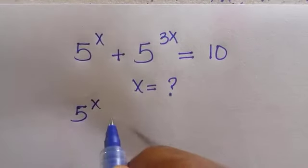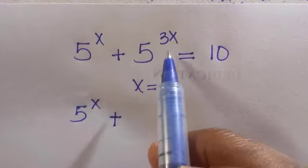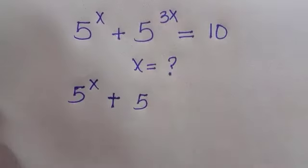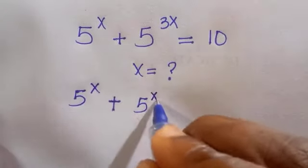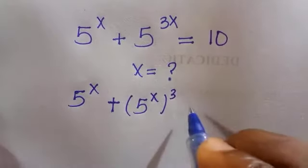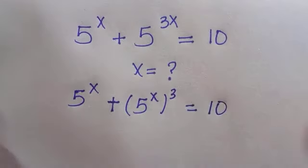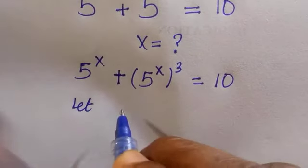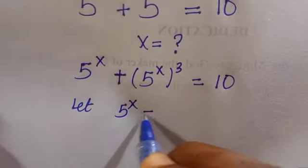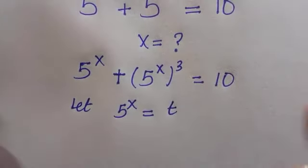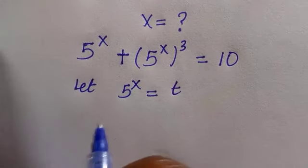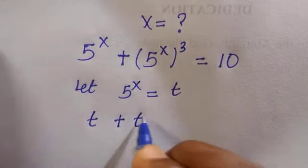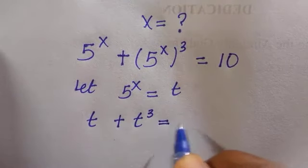By having this, we have 5 to the power x plus, so for this 5 raised to power 3x, I can change it to 5 raised to power x all to power 3. So everything equals 10. Then we are going to let 5 raised to power x to be another letter, and if I choose t, the reason is just to make this thing easy to solve. So we have this as t plus t raised to power 3 equals 10.